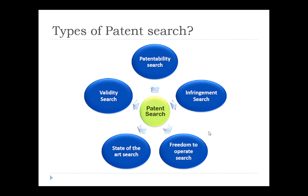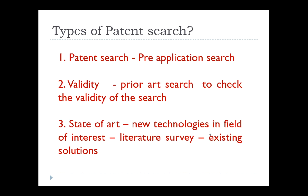The five common types are: patentability search, infringement search, freedom to operate (FTO) search, state of the art search, and validity search. The first — patentability search — is a pre-application search, very specific to patents, looking at what applications were filed before your invention.